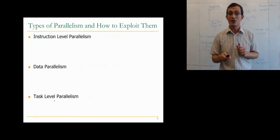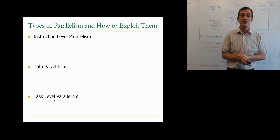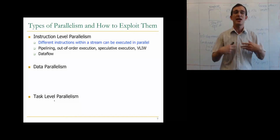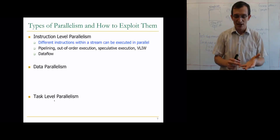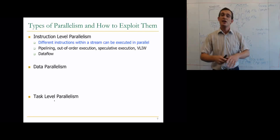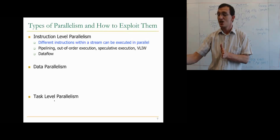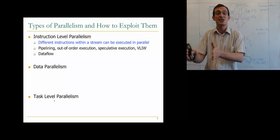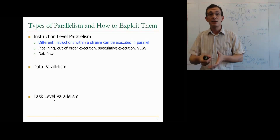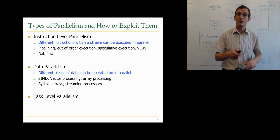There are different types of parallelism exploited in different ways: instruction-level, data, and task-level parallelism. Instruction-level parallelism means different instructions within a stream can be executed in parallel — techniques include pipelining, out-of-order execution, speculative execution, VLIW, and decoupled access-execute models. Out-of-order execution looks ahead into the instruction stream to find independent instructions whose latencies can be overlapped. A data flow model, where instructions fire when their inputs are ready, is another approach exploiting instruction-level parallelism.